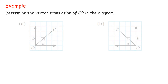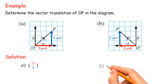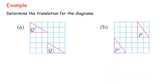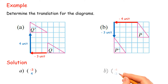Example: Determine the vector translation of OP in the diagram. Solution: A. Vector is (3, 3). B. Vector is (-3, 3). Example: Determine the translation for the diagrams. Solution: A. (-3, 4). B. (-4, -3).